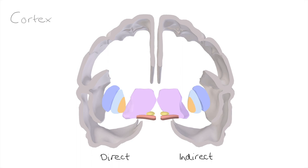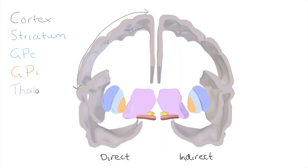First of all, we're going to write out the bits that are involved. We've got the cortex, the motor cortex, which occupies this part of the grey matter. We've got the striatum represented by the putamen solely in this model. We've got the globus pallidus externa, the globus pallidus interna, the thalamus in the midline, the subthalamic nucleus underneath the thalamus, and we've got two parts of the substantia nigra: the pars reticulata and the pars compacta.